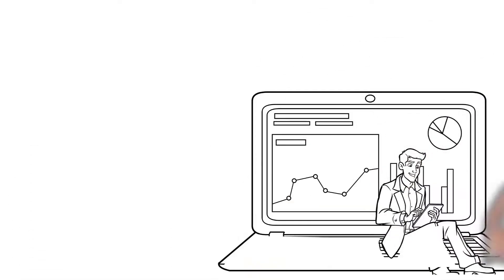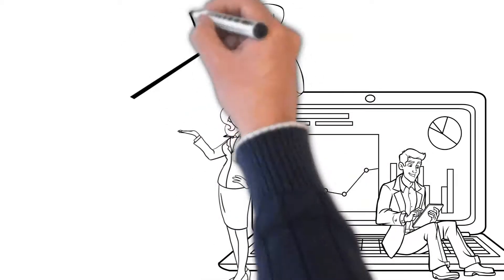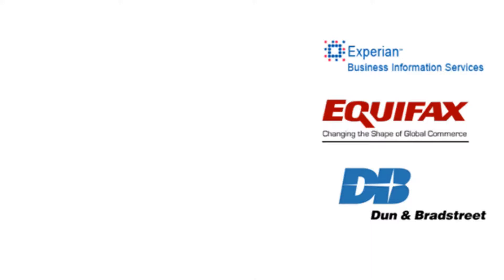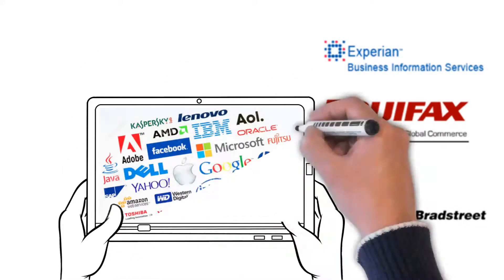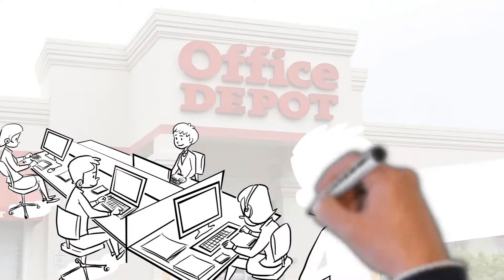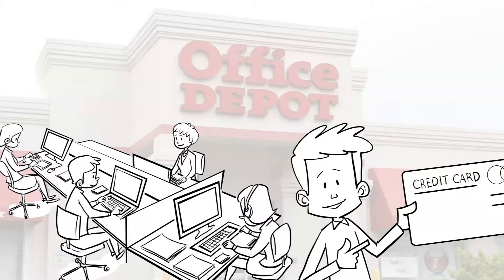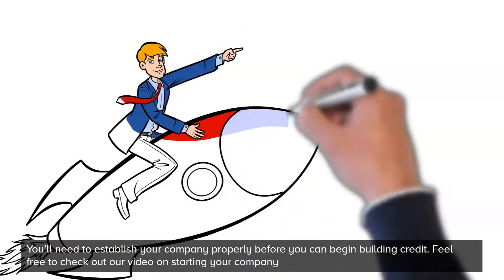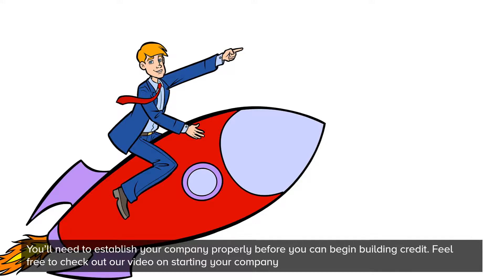Now the next thing I'm sure you're probably asking yourself is how do I start building a business credit score? There are many computer companies out there that will extend you a line of business credit. Some office supply companies will extend credit terms to you and then report your monthly payment to the business credit bureaus. You will need to establish your company properly before you can begin building credit. Feel free to check out our video on starting your company.